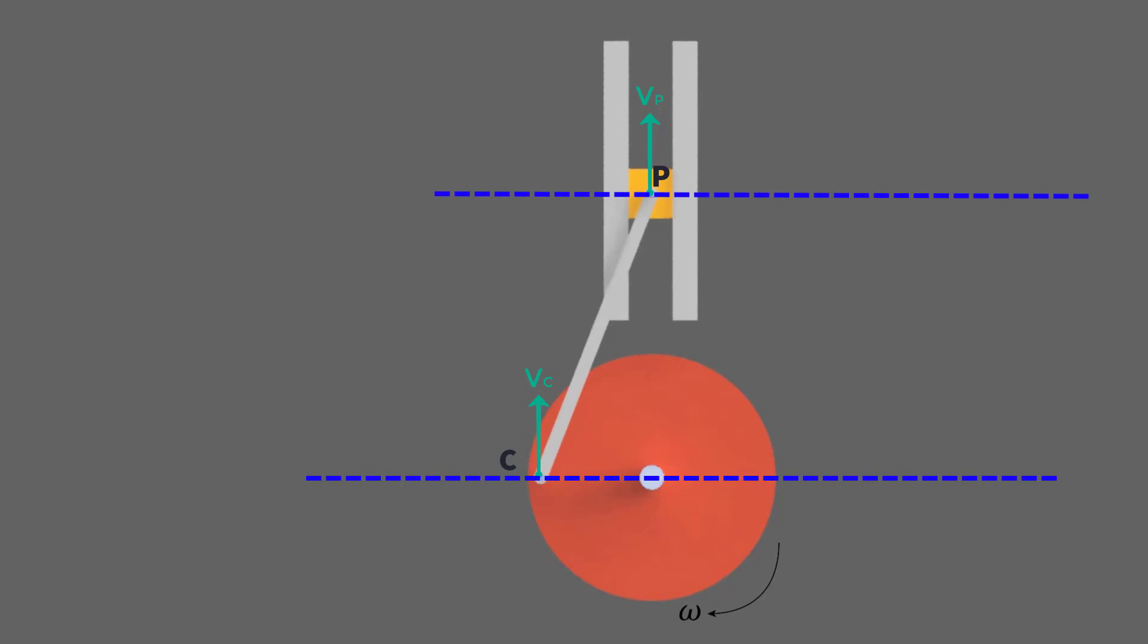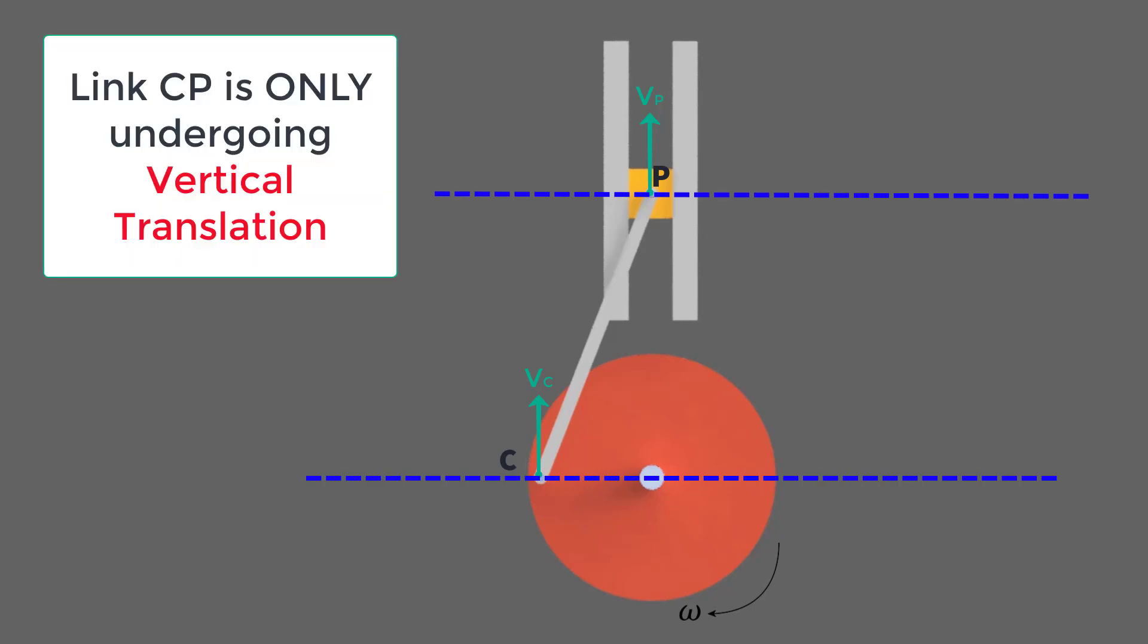Note here, these lines are parallel, therefore they do not intersect. In this case, link CP is only undergoing vertical translation since we have no instantaneous center for the link at this position.